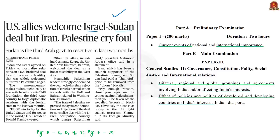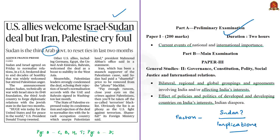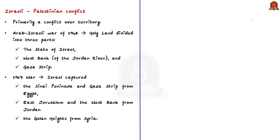This news article is about the Israel-Sudan peace deal. It's about current affairs with reference to the Arab world. We'll see various factors related to this deal, how Sudan is associated with Israel in the past, and some implications at the international level. The syllabus relevant for the analysis is highlighted here for your reference. This peace deal is reportedly an offshoot of the ongoing Israel-Palestinian conflict.